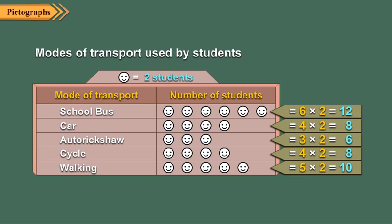Now, can you find the total number of students in the class? Obviously, to find the total number of students, we find 12 plus 8 plus 6 plus 8 plus 10. It comes out to be 44.